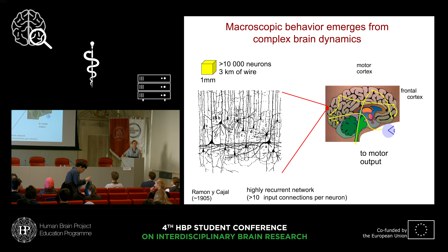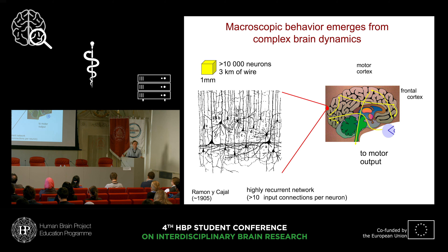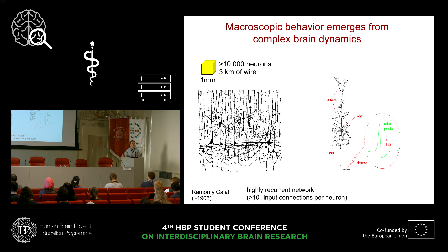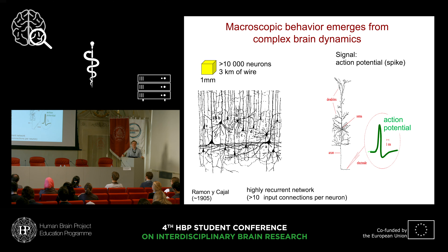There's a lot of wire — we have three kilometers of dendrites and axons. Nerve cells are highly recurrently connected, so one neuron typically gets on the order of 10,000 connections, so-called synapses, from other neurons. Already the single unit in this network is a complex machinery. It's a nonlinear device that transforms the inputs or spikes from many other neurons into an action potential, also called a spike. These spikes are the main information-carrying signals in the brain transmitted between neurons.